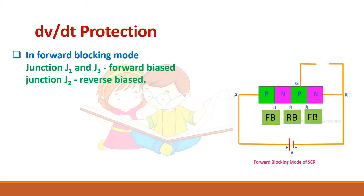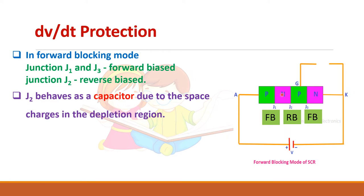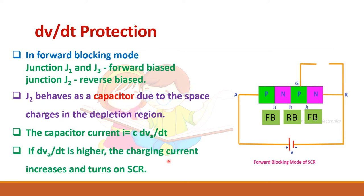For dV/dt protection — in the forward blocking mode, the outer two layers are forward biased and the central junction is reverse biased. This middle layer acts as a capacitor and a current flows through it given by C × dV/dt. So if this rate of change of voltage is high, the current will be high, which in turn will turn on the SCR. We have to protect the SCR from this dV/dt problem.